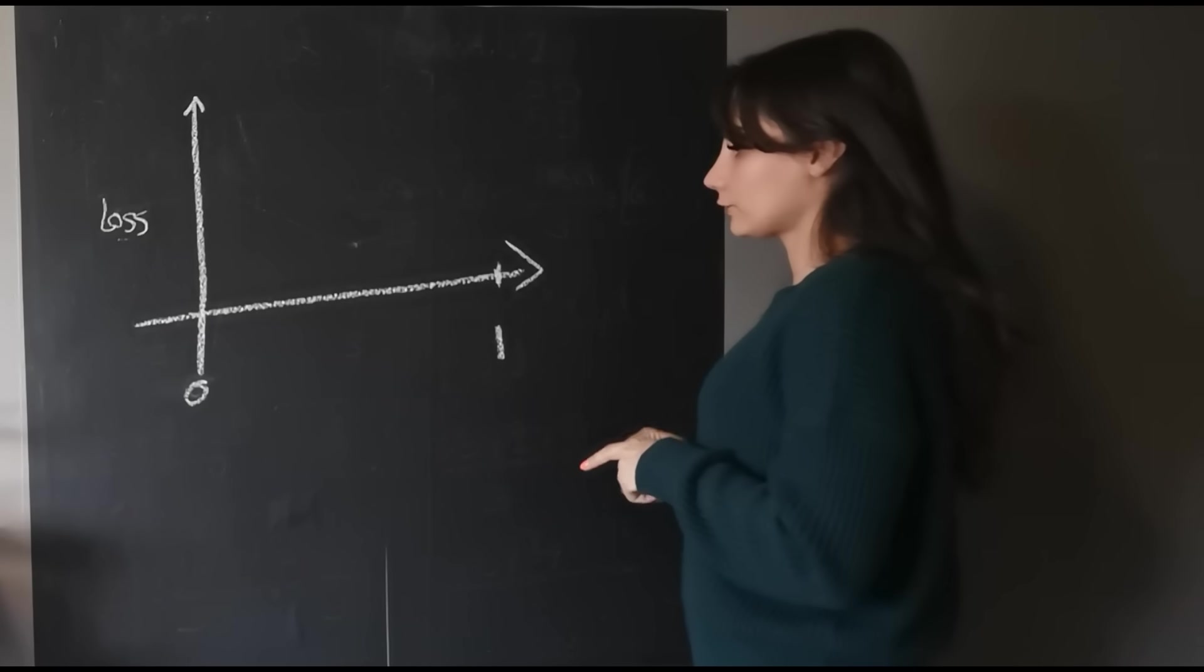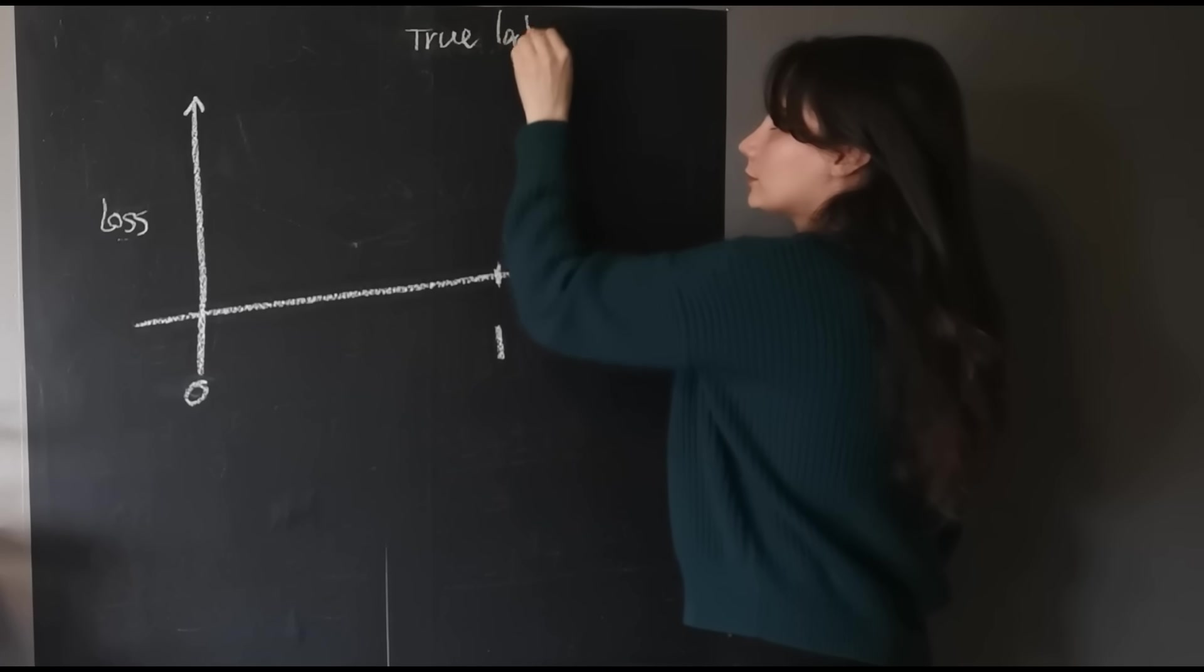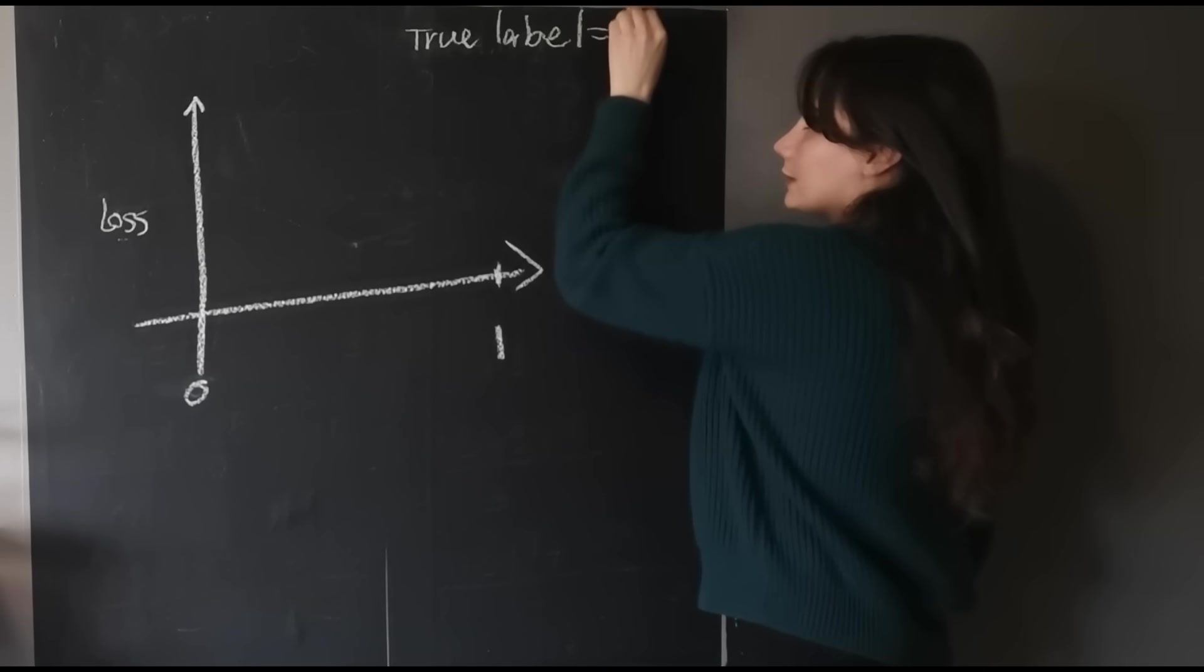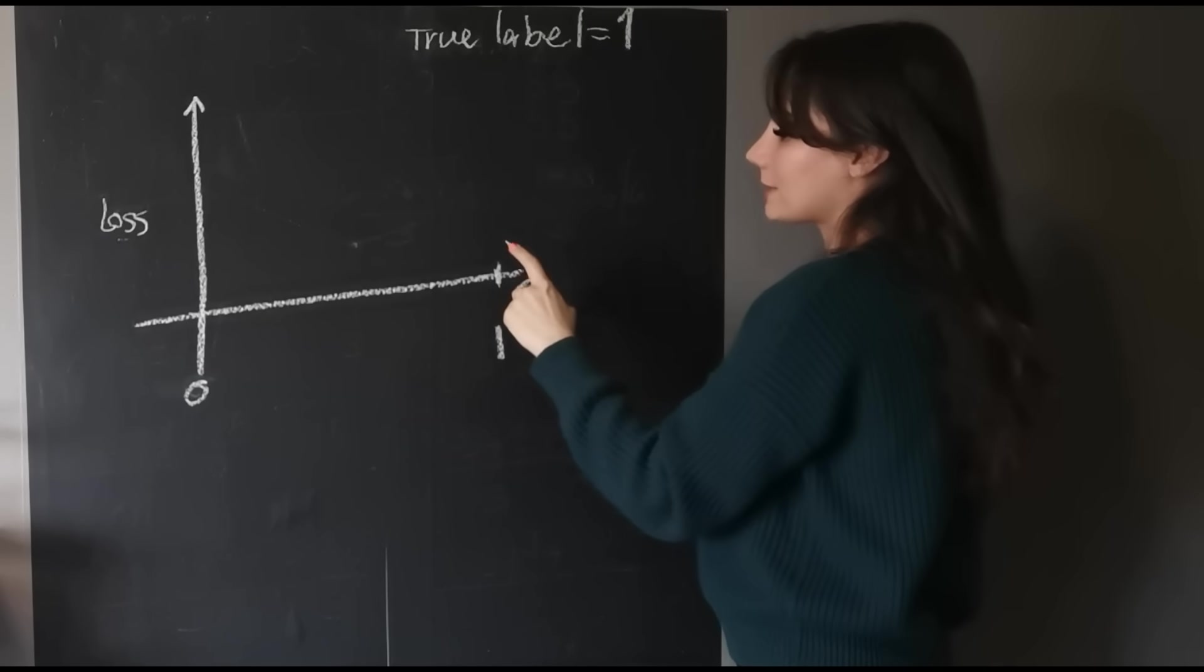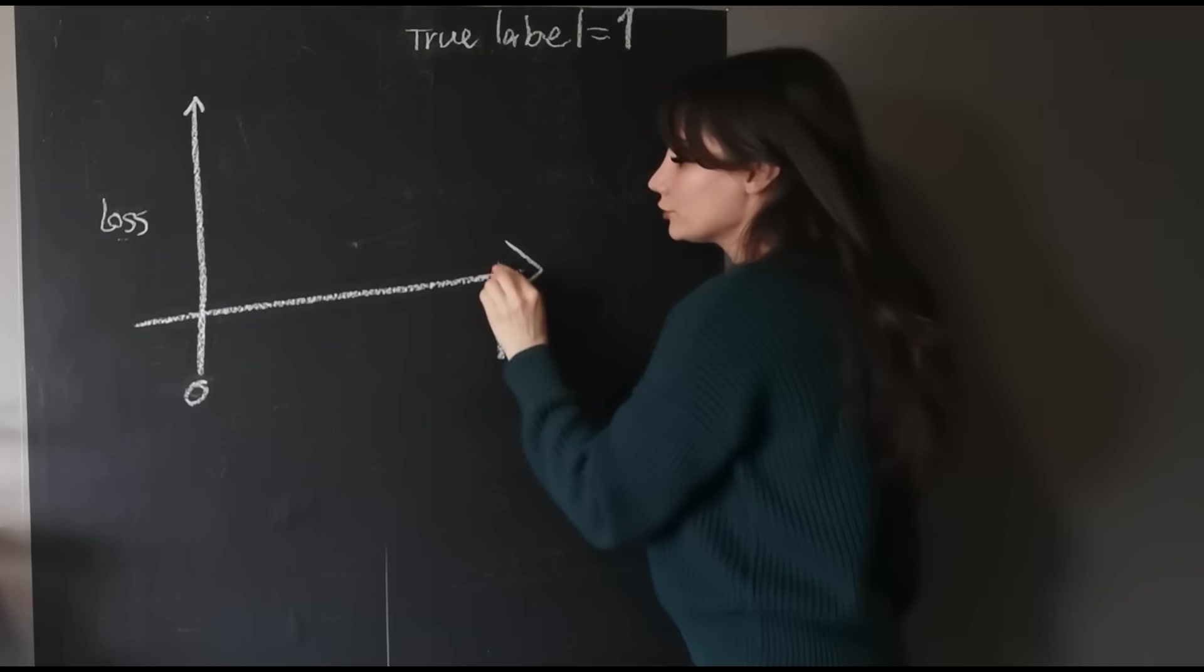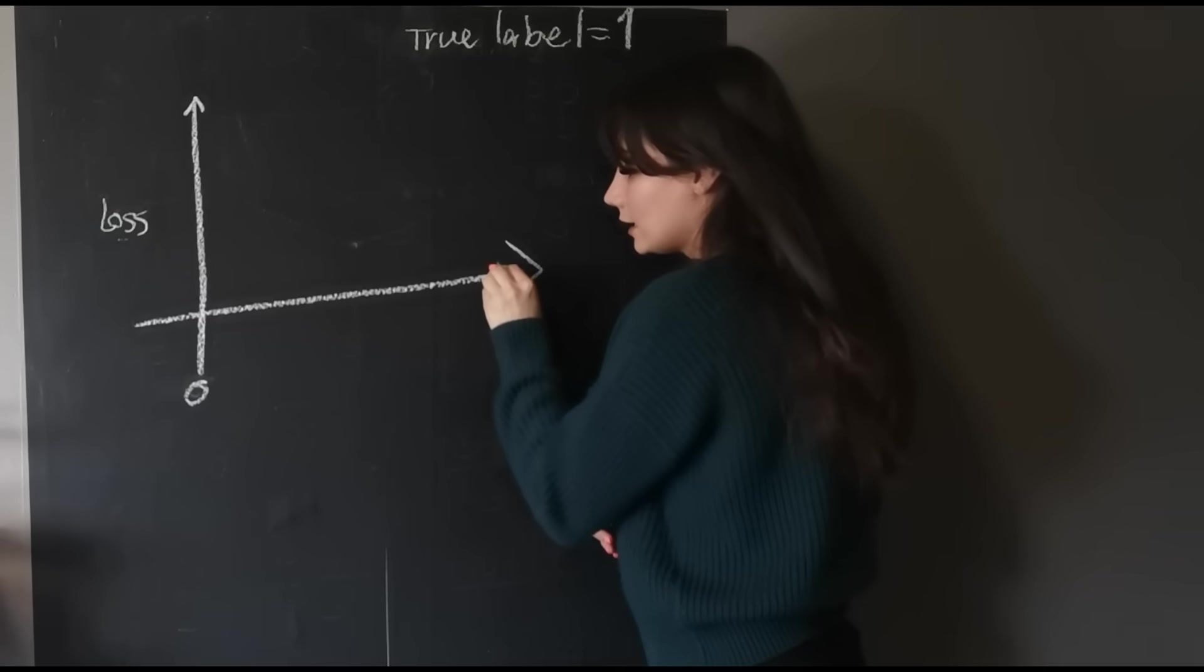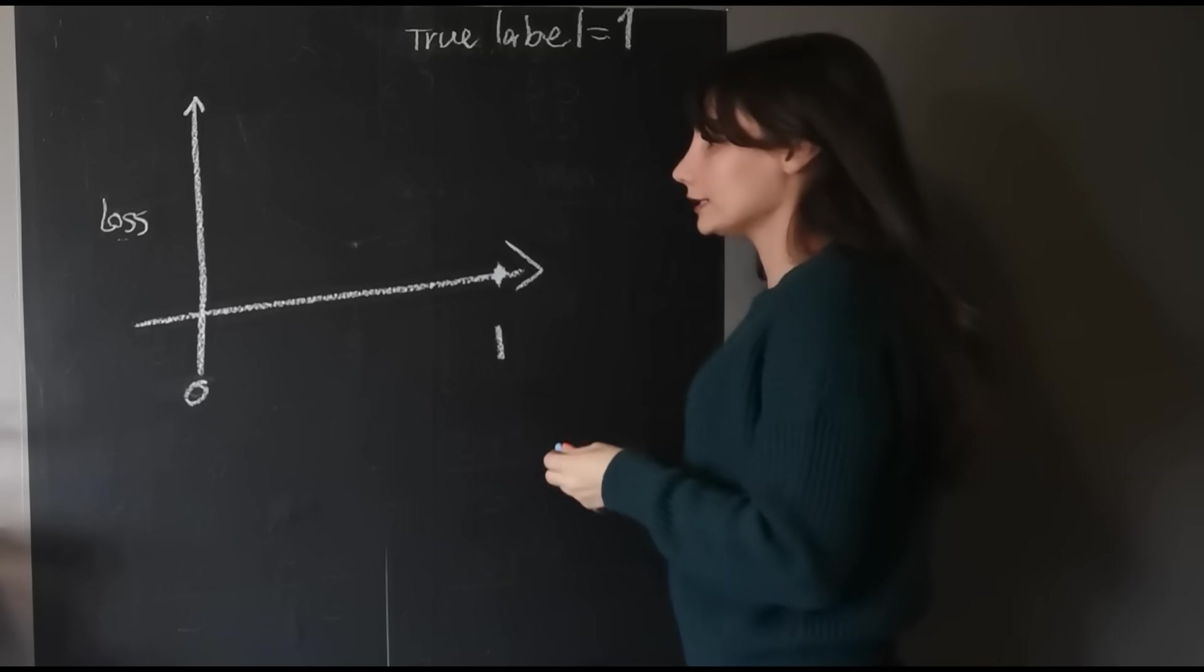So first, let me say the true label is one. So that means that when I am at one, that's the correct answer. So I'm going to start from here. If I get an actual one, that means my error is zero because the true label is one.